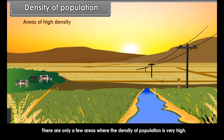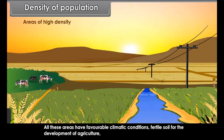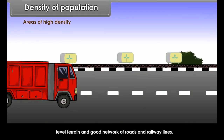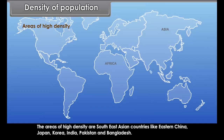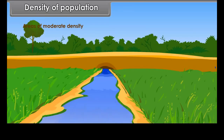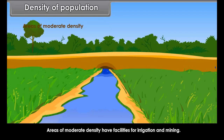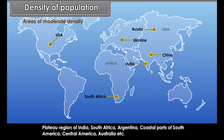Density of Population. The number of people living in a unit area of the surface is called population density. On the basis of density, the world can be classified into areas of high density, areas of moderate density, and areas of low density. Areas of high density have favourable climatic conditions, fertile soil for agriculture, level terrain, and good networks of roads and railways. These include South East Asian countries like Eastern China, Japan, Korea, India, Pakistan and Bangladesh.